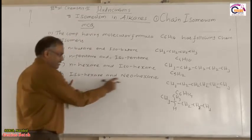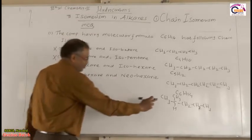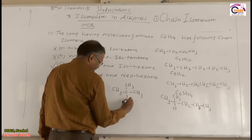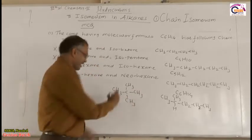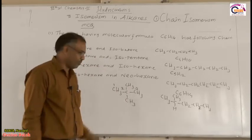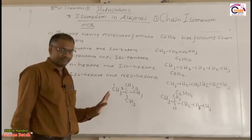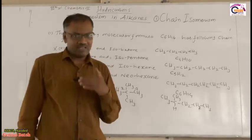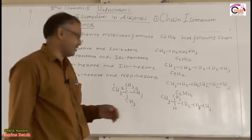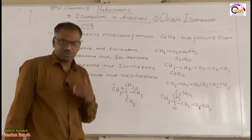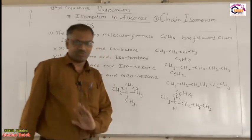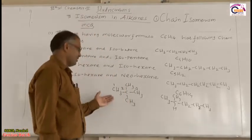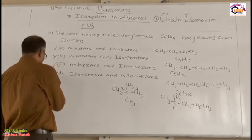Option D: isohexane and neohexane. The structure of neohexane has the second carbon bearing two methyl groups. Although isohexane and neohexane both have C6H14, they have the same carbon skeleton — both are branched chains with the same nature. The condition for chain isomerism requires that the carbon skeleton must be different, so isohexane and neohexane are not chain isomers of each other. Option D is not the answer.